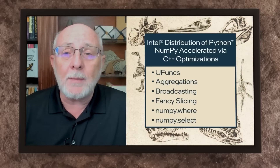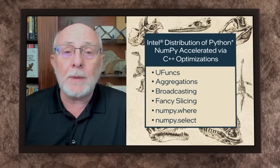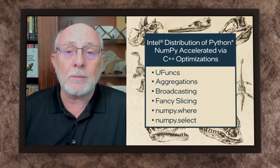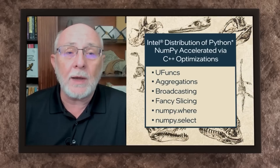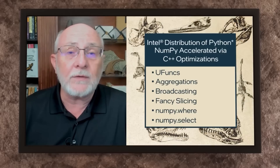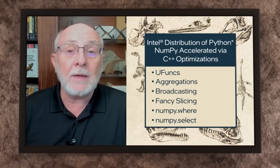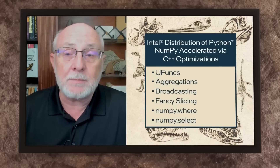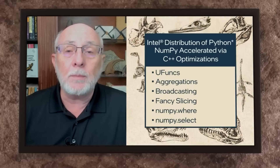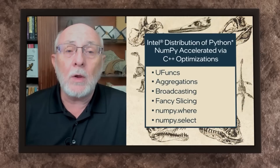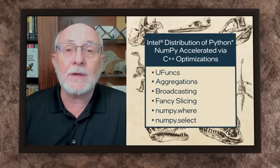It is somewhat common for loopy Python code to be accelerated on the order of 2x, 5x, 10x, and even up to 300x potentially, by proper loop replacement with NumPy functions.